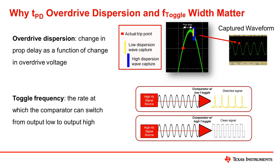Before we get started, there are two high-speed terms that are specific to these end equipment I'd like to review. Overdrive dispersion is defined as the change in propagation delay as a function of the change in overdrive voltage. In test and measurement equipment, coupled with low propagation delay, overdrive dispersion helps reduce the variability in the delay between the actual trip point of a waveform and the waveform capture image, bringing the signal consistently closer to the origin point.